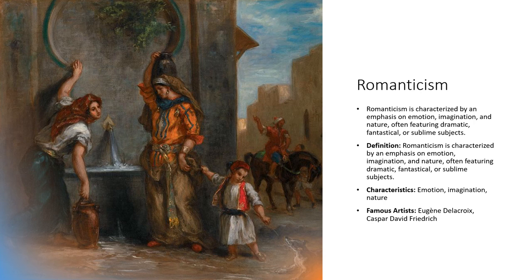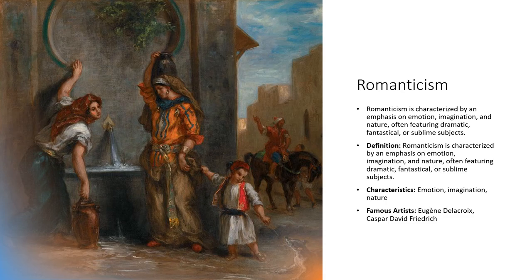We have romanticism. Romanticism is characterized by an emphasis on emotion, imagination, and nature, often featuring dramatic, fantastical, and sublime subjects. Emotion, imagination, and nature are key characteristics. This is Eugène Delacroix who painted this painting on the left-hand side. Delacroix has a much more famous painting but I included this one to give an understanding of Delacroix's artistic style.